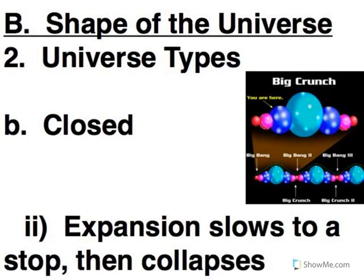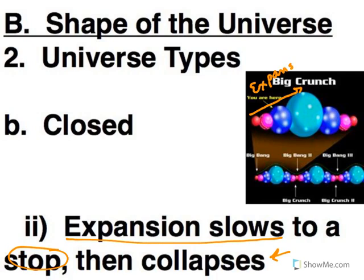So because of all of that gravity, the expansion is going to slow down, and it's going to slow down enough that it actually stops and then collapses back down on itself. And that's what this top picture is showing. Here's the expansion and then the contraction.